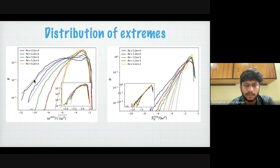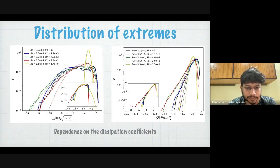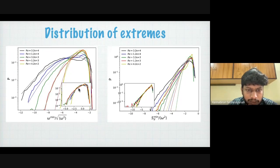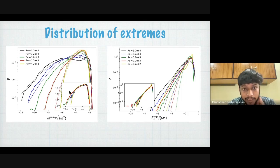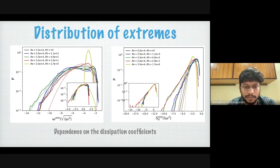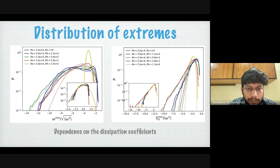There is a strong dependence on the dissipation coefficients — even if one rescales the distribution by the respective standard deviations, both the tails and the central part of the distribution change with Reynolds number. There is no universal distribution. The question is: can we try to understand what leads to such distributions? The correlations in turbulence — fluid parcels are not independent of each other but interact through the field equations — break the IID assumption of the Fisher-Tippett-Gnedenko theorem, and this is what we need to understand.